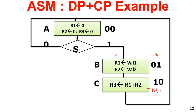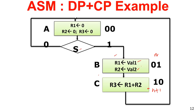This is the ASM for the English-like statement. These are 2 registers that need to be loaded from switches when start equals 1. That is loading value1 and value2. Then in the next cycle, you add them and store into register R3. There are 3 states which can be encoded as 00, 01 and 10.